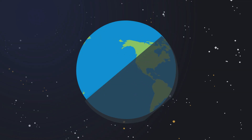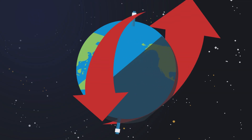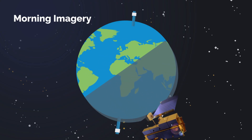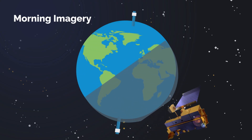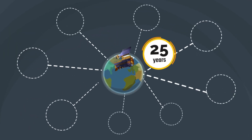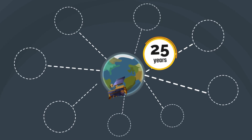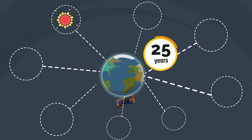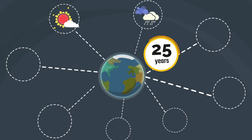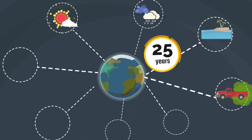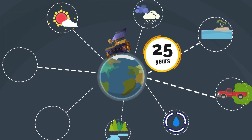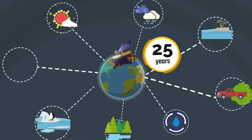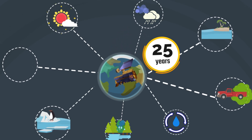Terra orbits the Earth from pole to pole, completing multiple global orbits a day, orbiting from north to south and passing the equator in the morning. For over 25 years, Terra's five instruments have continuously captured daily morning observations of radiation, clouds, water vapor and precipitation, the oceans, greenhouse gases, land surface hydrology and ecosystem processes, glaciers, sea ice and ice sheets, and wildfires.